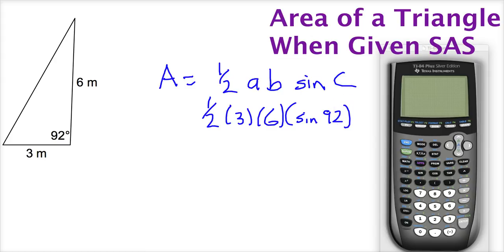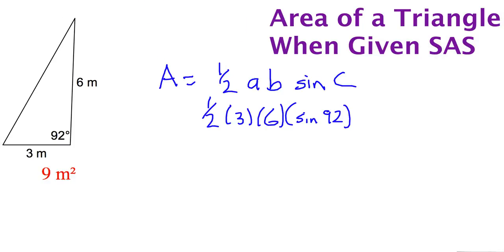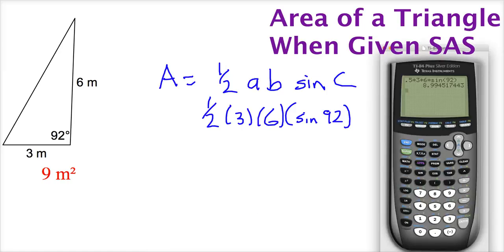And then sine of 92 degrees. And since I've already changed my mode to degrees, this should work. Close that out, hit enter, and that should give me my area. So let me check my answer. Nine. And I got 8.99. So yeah, nine.